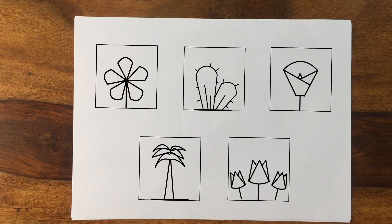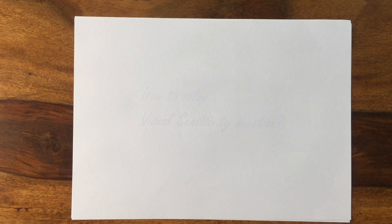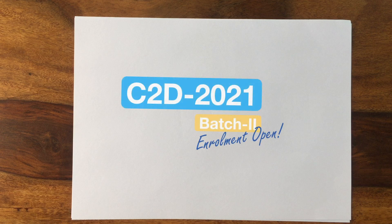So this is how you were supposed to attempt this question. This was an attempt to help you understand how to attempt a visual sensitivity question in the exam. I hope this was helpful. Before I conclude, I would like to tell you that students who want to enroll in the C2D program can now do so by visiting our website — the link is mentioned below. Please take some time to see what we are offering in these courses. We will meet again soon with a new video. Until then, please be healthy and be safe. Thank you.